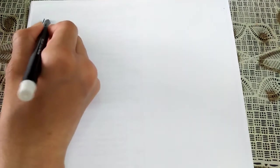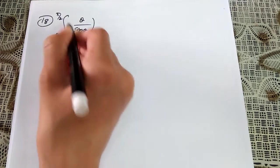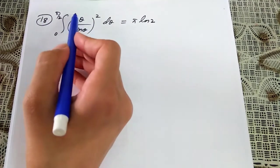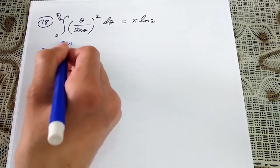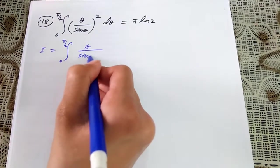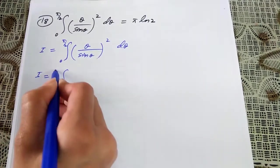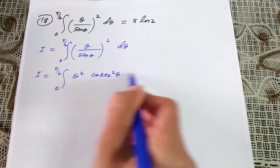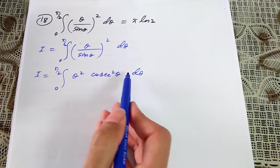Question number 18: integrate from 0 to π/2 of (θ/sin θ)² dθ equals π ln 2. Consider this integral equals i. So i equals the integral from 0 to π/2 of θ² over sin²(θ) dθ, which can be written as θ² times cosec²(θ) dθ, because 1 over sin θ is cosecant θ and squaring gives cosec²(θ).